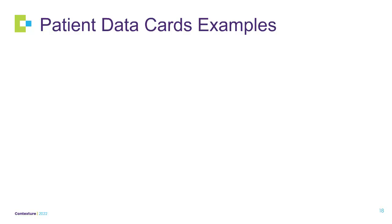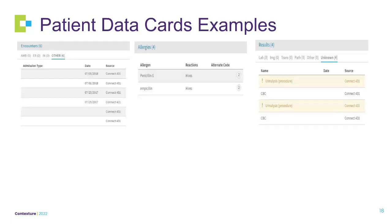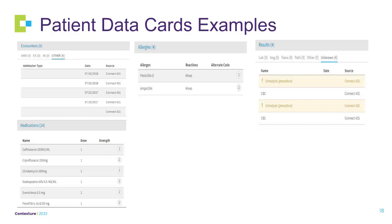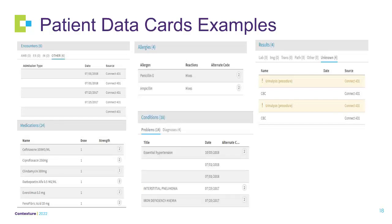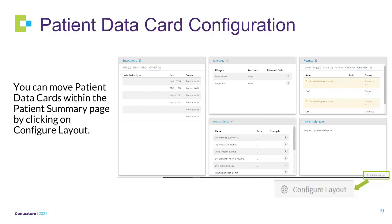The following are examples of data cards: encounters, allergies, results, medications, conditions, and more. Click on each card to view additional information. You can move patient data cards within the patient summary page by clicking on Configure Layout.